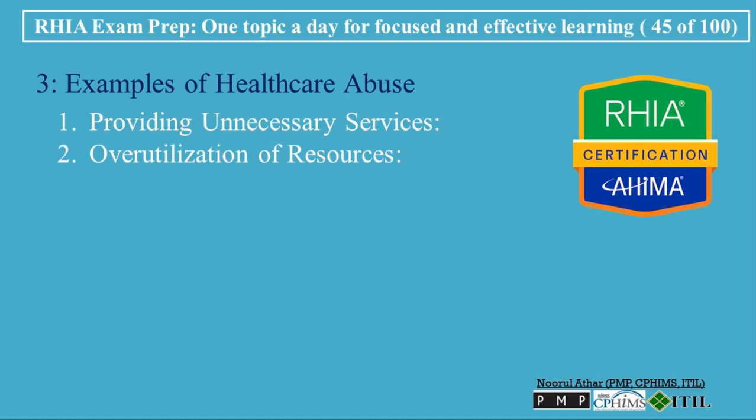Overutilization of resources is another form of abuse, where providers use more healthcare resources than are necessary — for example, admitting patients to the hospital when outpatient care would have been sufficient. Misusing billing codes can also constitute abuse when providers unintentionally use incorrect codes resulting in higher reimbursements, due to lack of knowledge or training, but still resulting in improper billing and increased costs.